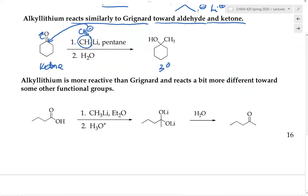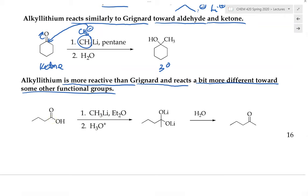Why is the alkyl lithium reagent more reactive than the Grignard reagent? This is very important to remember and understand. The alkyl lithium reagent is even more reactive than the Grignard and therefore behaves slightly differently toward some functional groups. For example, we've seen that when a carboxylic acid reacts with the Grignard reagent, it undergoes an acid-base reaction but not nucleophilic addition. However, if we use the alkyl lithium reagent instead, it can perform nucleophilic addition to the carbonyl carbon. That is one very important and distinct difference between the reactivity of the alkyl lithium reagent versus the Grignard reagent.